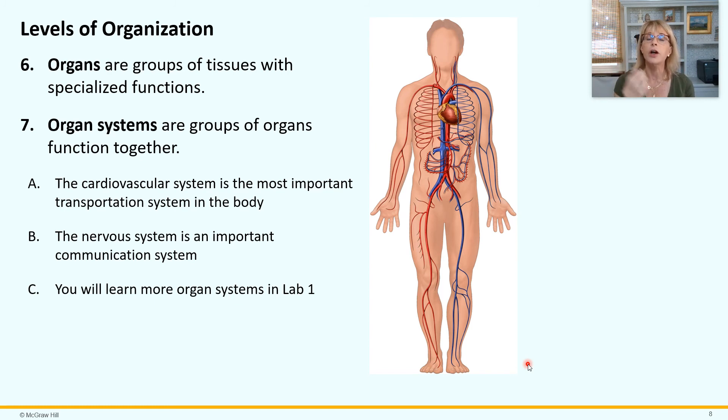Another organ system is the nervous system. The nervous system, brain, spinal cord, peripheral nerves, autonomic nerves, these guys all work together. They're all part of the nervous system. And the nervous system is a very important communication system of the human body. Your first lab, you will learn lots of organs and organ systems along with anatomical terminology.